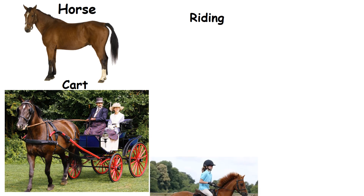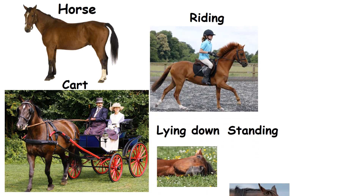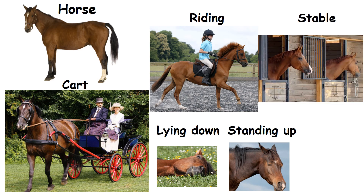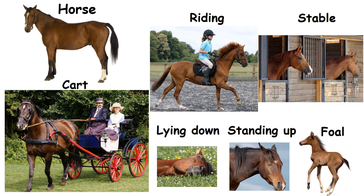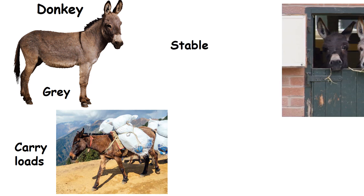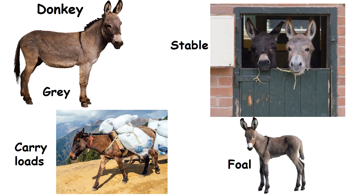Horse: People use it to pull carts and for riding. It can sleep both lying down and standing up. Its home is called a stable and its young one is called a foal. Donkey: It is grey in colour. People use it to carry loads. Its home is called a stable and its young one is called a foal.